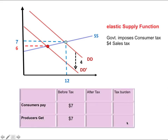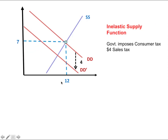Now let's see what happens with an inelastic supply function. Everything else remains the same — the government still imposes a sales tax of four dollars and we have the same demand functions. The equilibrium price before tax would still be seven dollars. Having an inelastic supply function brings down the equilibrium price further, all the way down to four dollars.